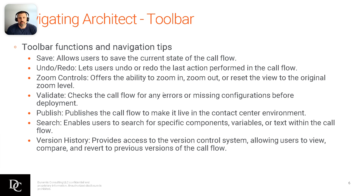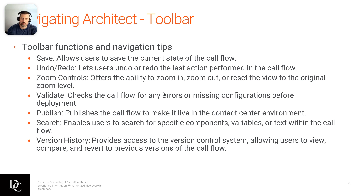Validating is also very important. Yellow indicators show informational items — a yellow box with a number — and you can still publish with those. Red indicators mean the flow cannot be published until fixed. Publishing the call flow makes it live in the contact center. Until you publish a new version, the previous version is still active — callers won't experience the newest version until you publish. It may be best to publish after hours to reduce system load.